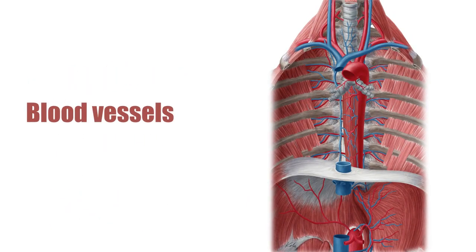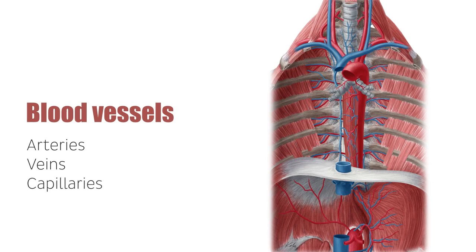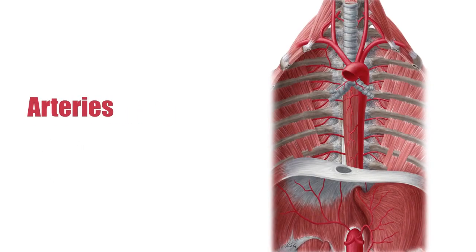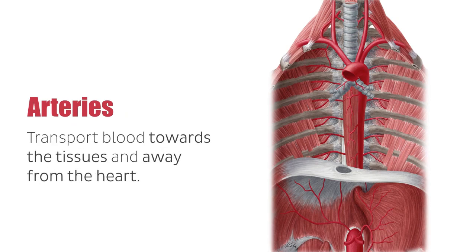There are three major classes of blood vessels, namely arteries, veins, and capillaries, and they are categorized according to their histological structure. Arteries transport blood between the tissues and away from the heart and have thick muscular walls with small internal lumina or passageways that can withstand blood under high pressure.